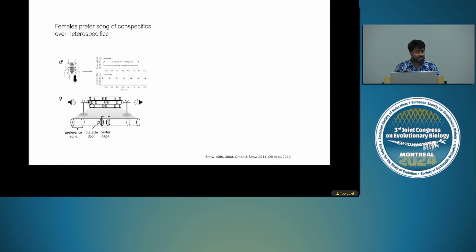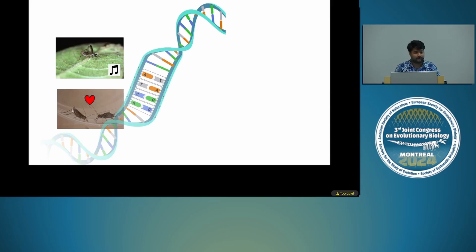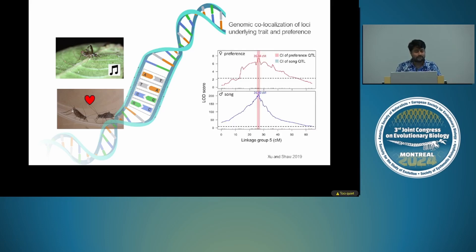We also know that females prefer male-specific songs. In phonotaxis trials where you play a conspecific and heterospecific song, they almost always choose the conspecific song. Females also have close-ended preference functions for male pulse rates, and pulse rate and peak pulse preference for females co-vary across many species in this genus. The lab has also looked at the genetic basis of male song and female preference, doing QTL studies and finding genomic co-localization of loci underlying male song and female preference.